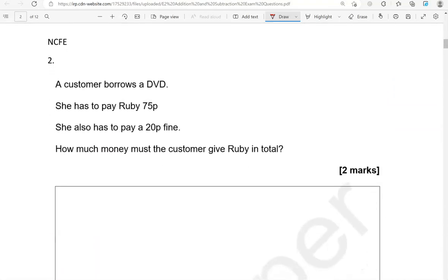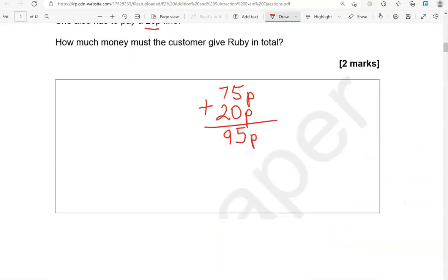A customer borrows a DVD. She has to pay Ruby, who is the librarian, 75 pence. She also has to pay a 20 pence fine. How much money must the customer give Ruby in total? So that is 75p as well as the 20p. We're going to add 20p on top of the 75. 5 and 0, that is 5. 7 and 2 is 9. So 95 pence.